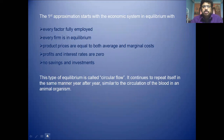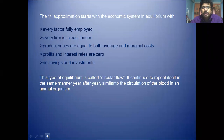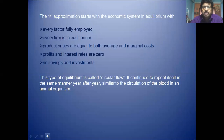The first approximation starts with the economic system in equilibrium, with every factor fully employed and every firm in equilibrium. Product prices are equal to both average and marginal cost, profits and interest rates are zero, and there are no savings and no investment. When there is equilibrium in the economy, innovation gets started from that equilibrium.